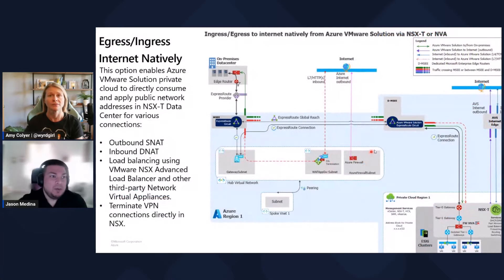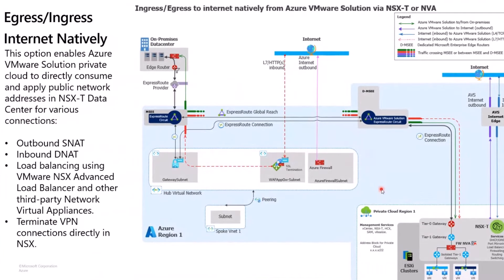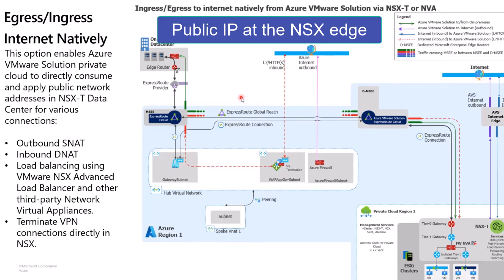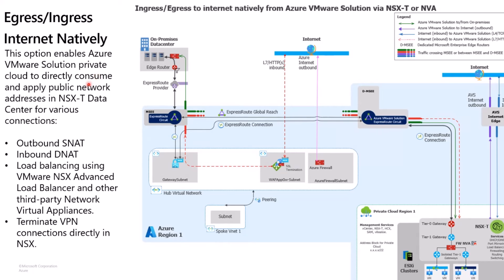We have a feature where we can go ahead and egress and ingress to the internet natively from Azure VMware Solution. This is also known in our documentation as public IP at the NSX Edge. What this option does is it enables us, within our private cloud, to have public network IP addresses that are dedicated to our AVS environment. We can do outbound SNATting and inbound DNATting directly from the internet. For load balancing, you can use an NSX Advanced Load Balancer or a third-party virtual appliance.